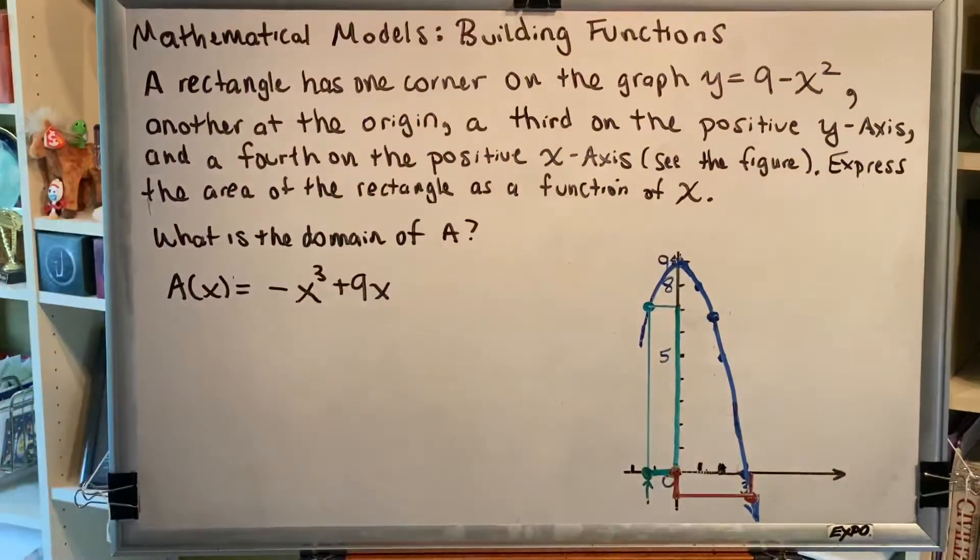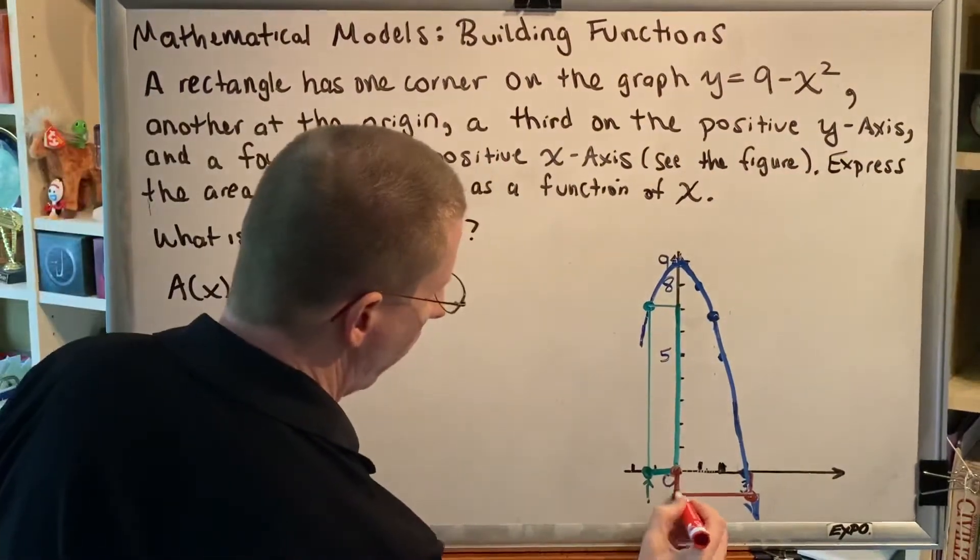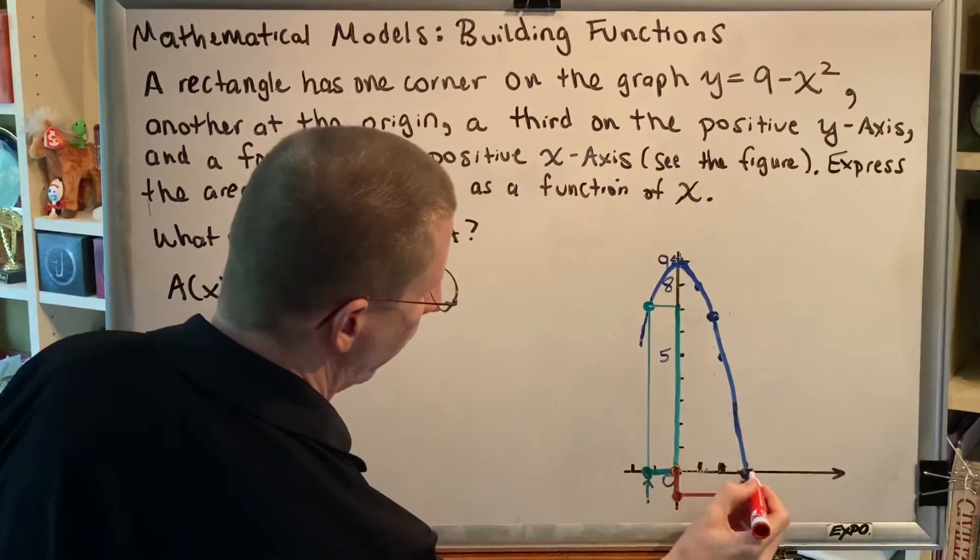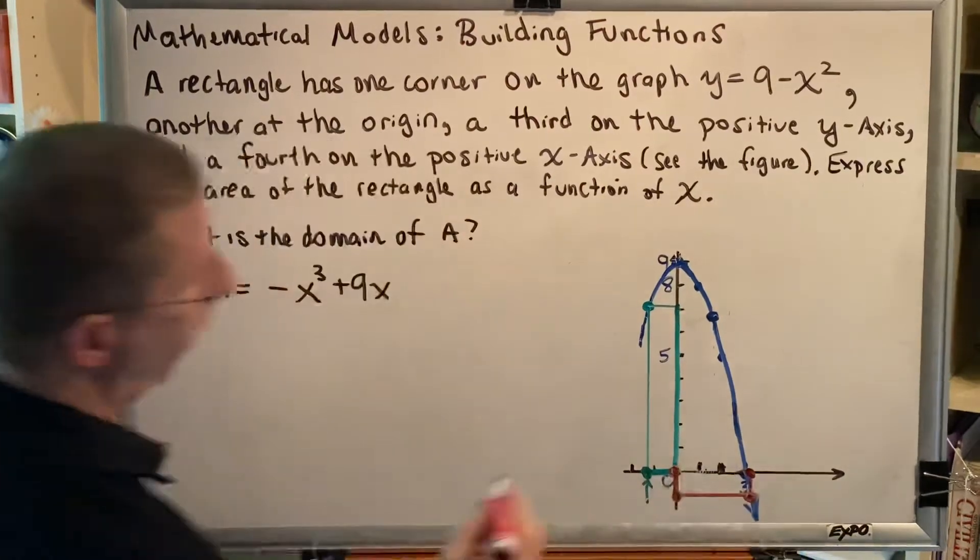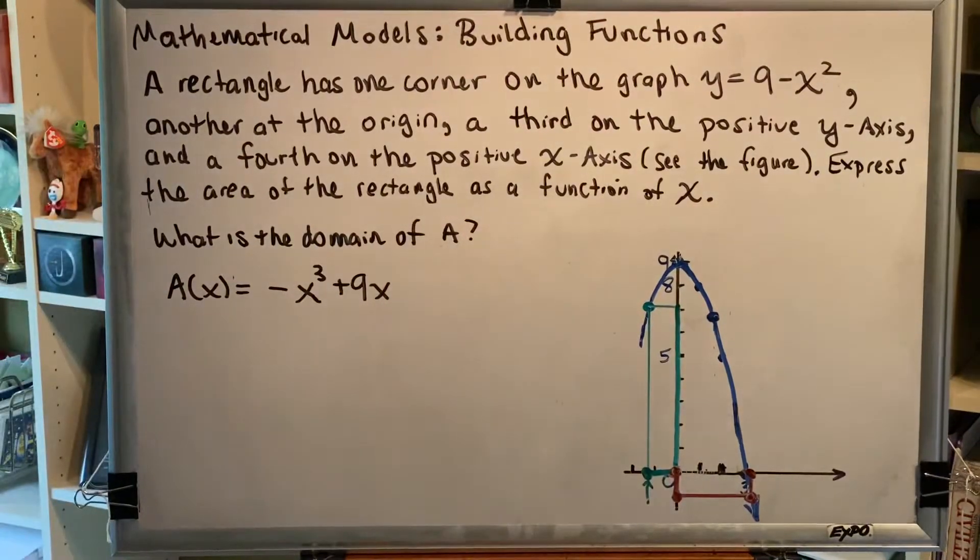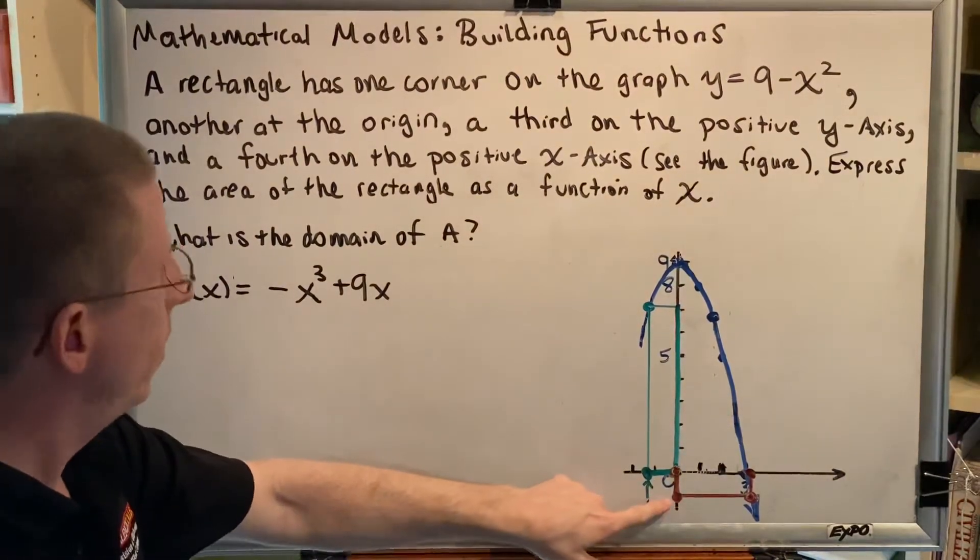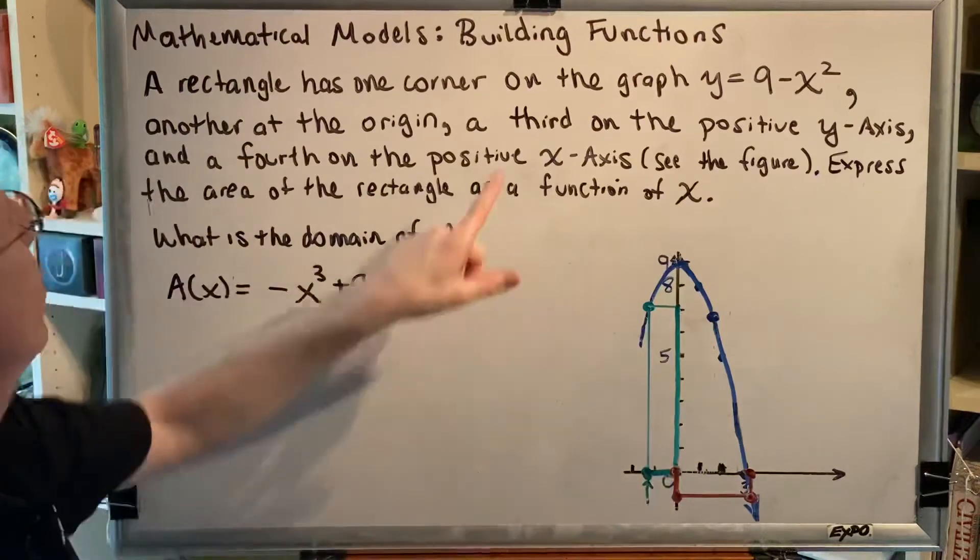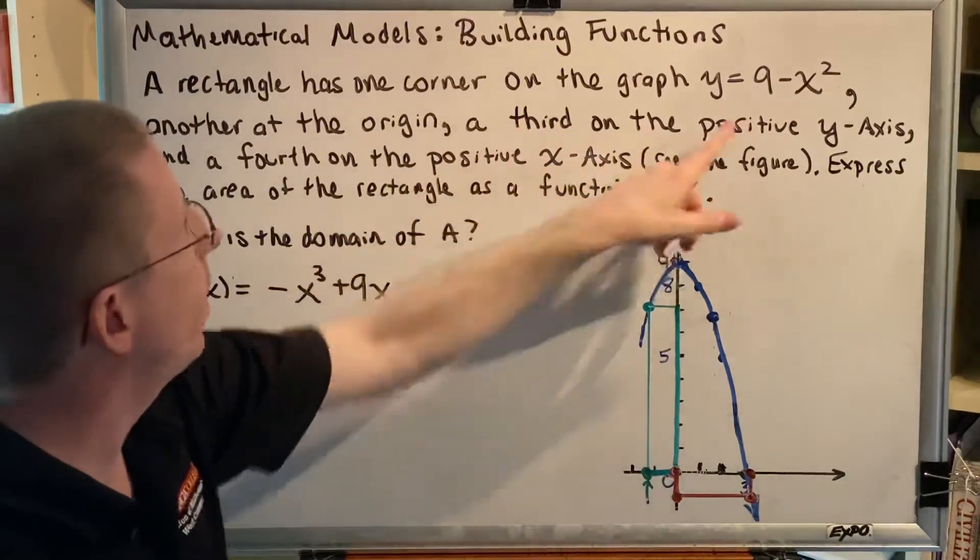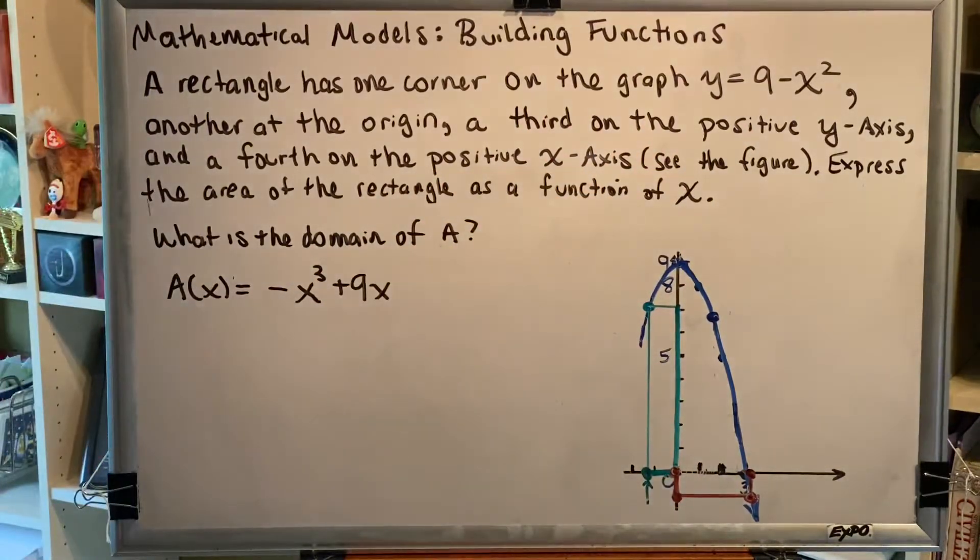Now, is this an acceptable rectangle? Here are the four corners: there, there, there, and there. Is that an acceptable rectangle? The answer is no, because this point, the third point, is on the negative y-axis and the instructions say that it has to be on the positive y-axis.